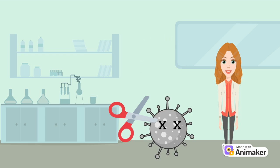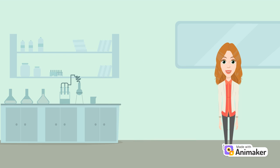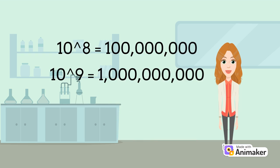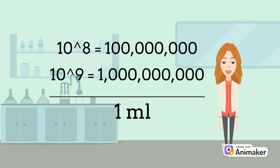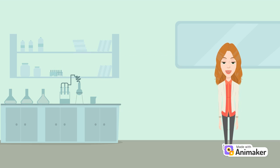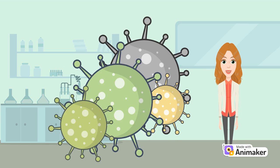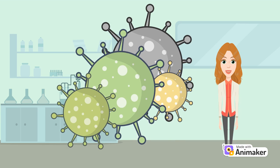Influenza viruses can grow to very high titers in eggs — something like 10 to the 8, 10 to the 9 virus particles per milliliter. And you can get, in the best case scenario, about 10 milliliters out of an egg. So really large amounts of virus come out of that egg.